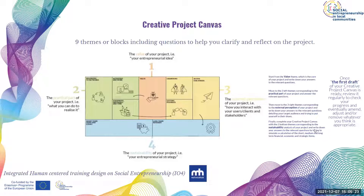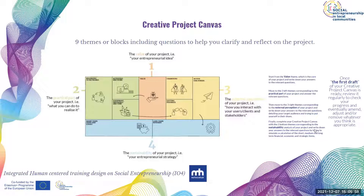Then you move to the right part of the canvas, which includes three blocks and makes you reflect upon the external perception of the project — how you, as an entrepreneur, interact with your users, clients and stakeholders. So you have champions, access for others, and getting feedback. And then the bottom part consisting of two blocks, short-term gains and losses and long-term rewards, are related to the sustainability of your project — that is the entrepreneurial strategy.